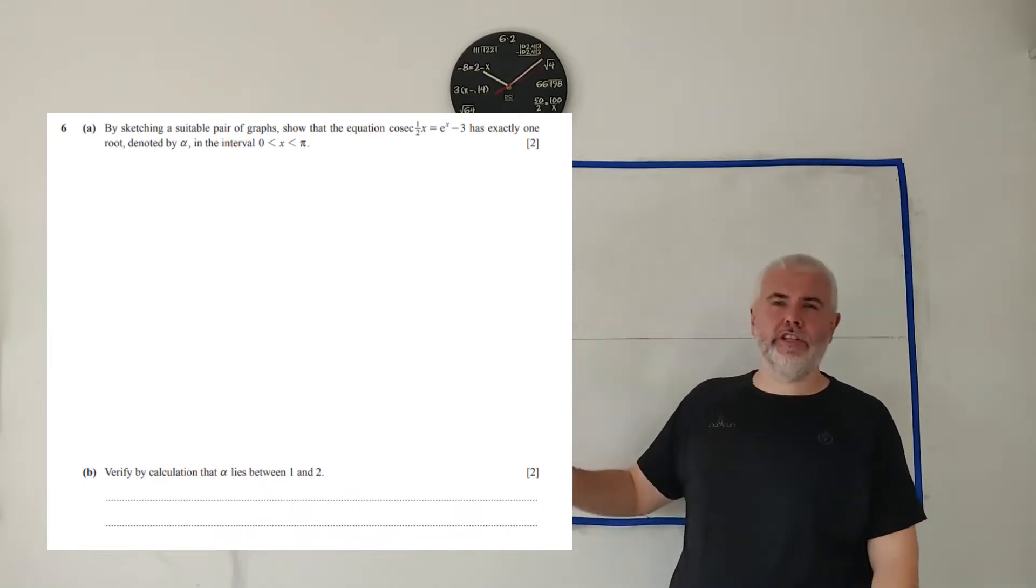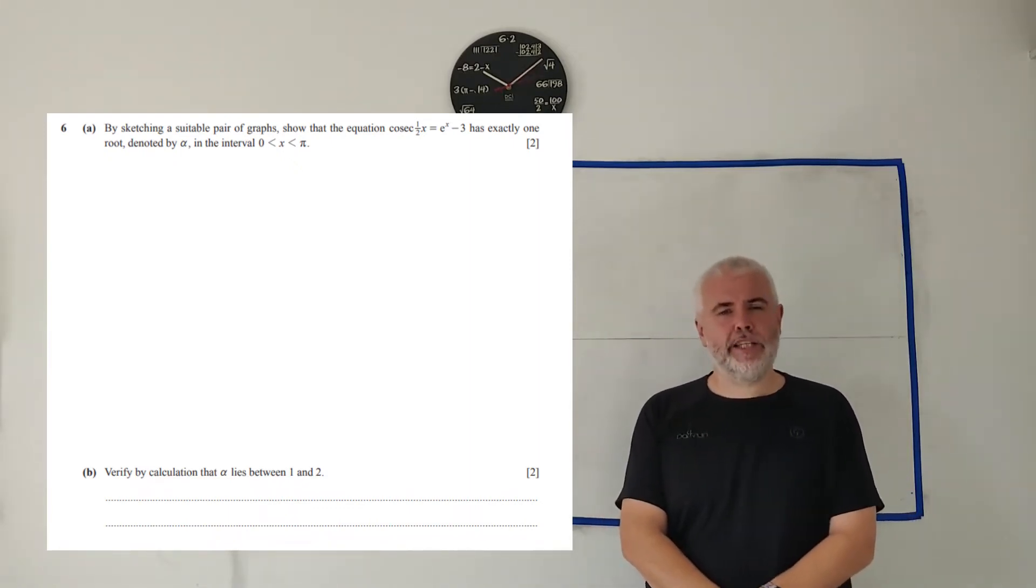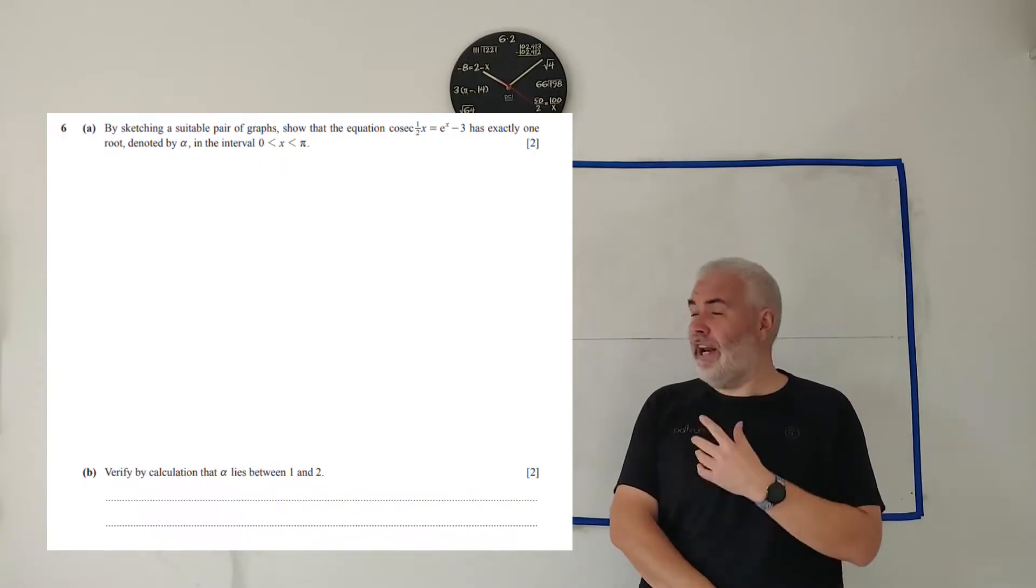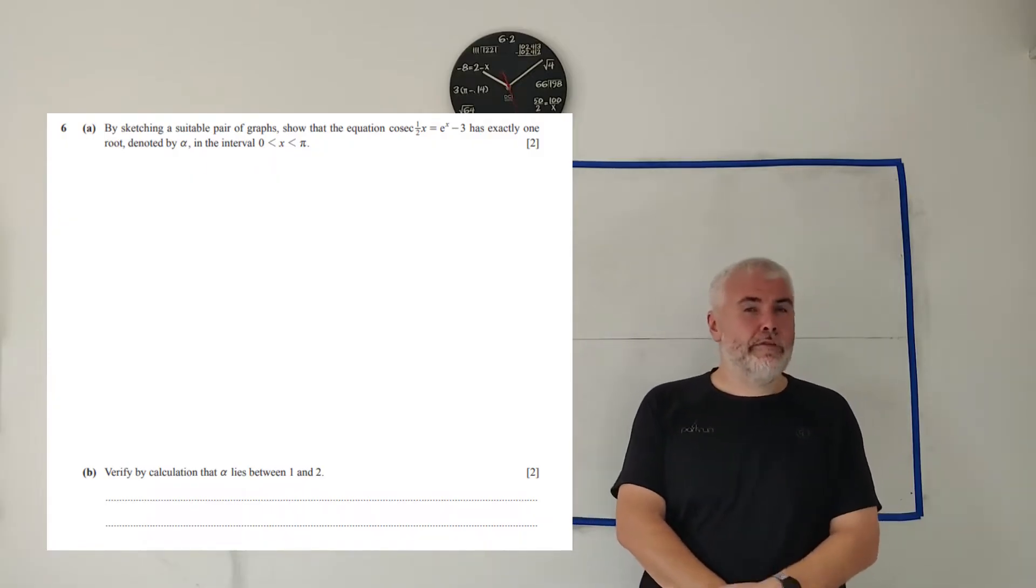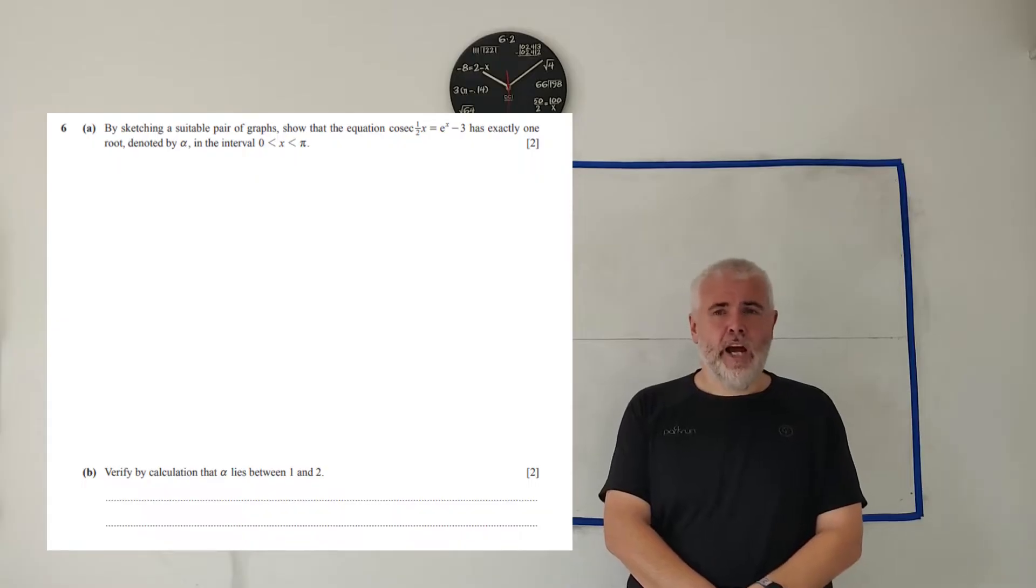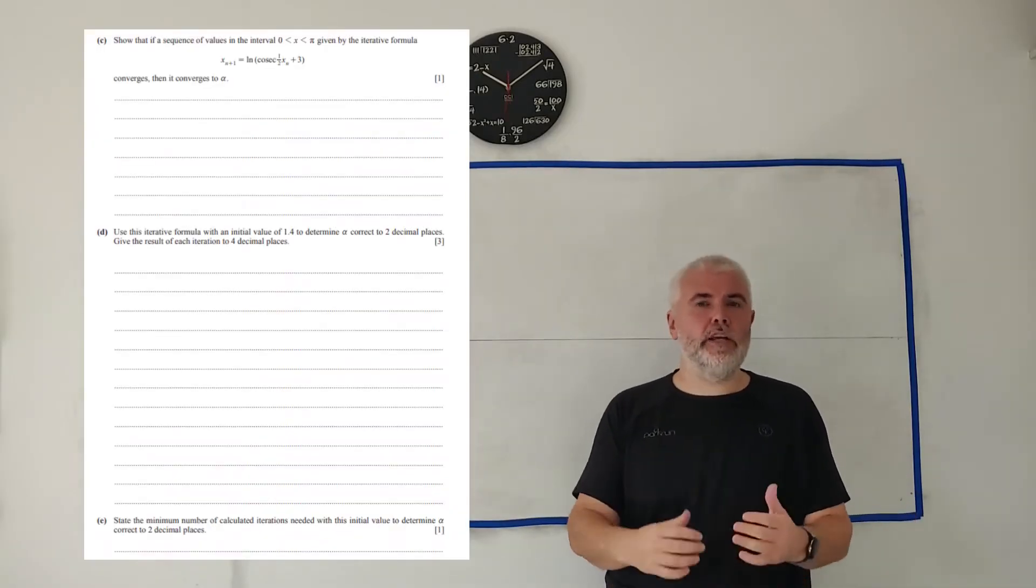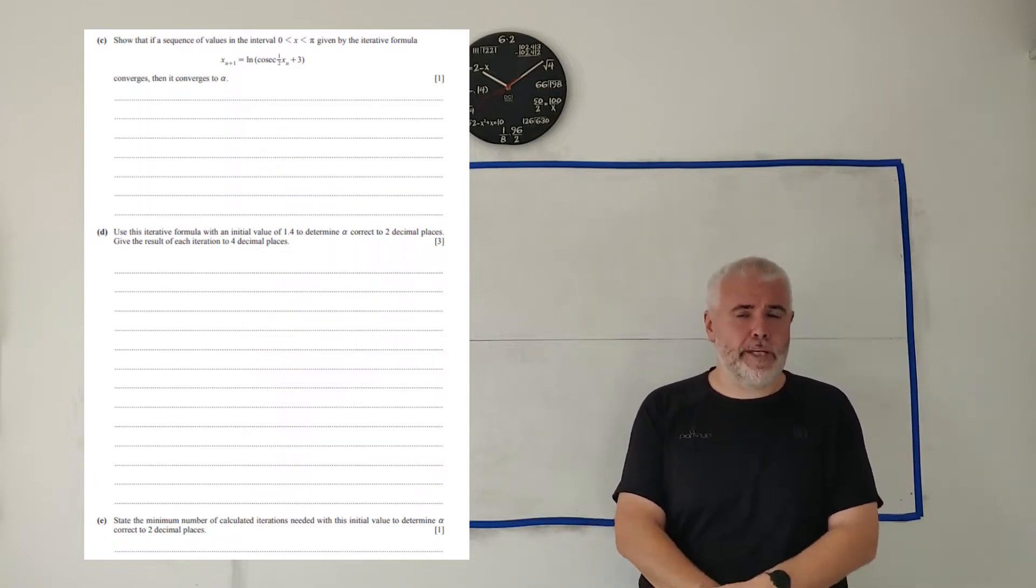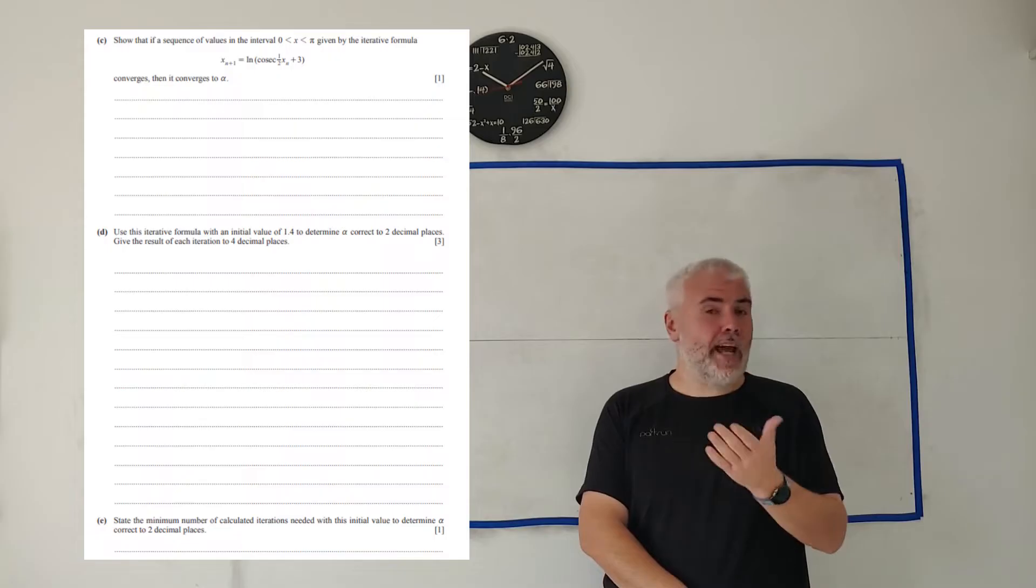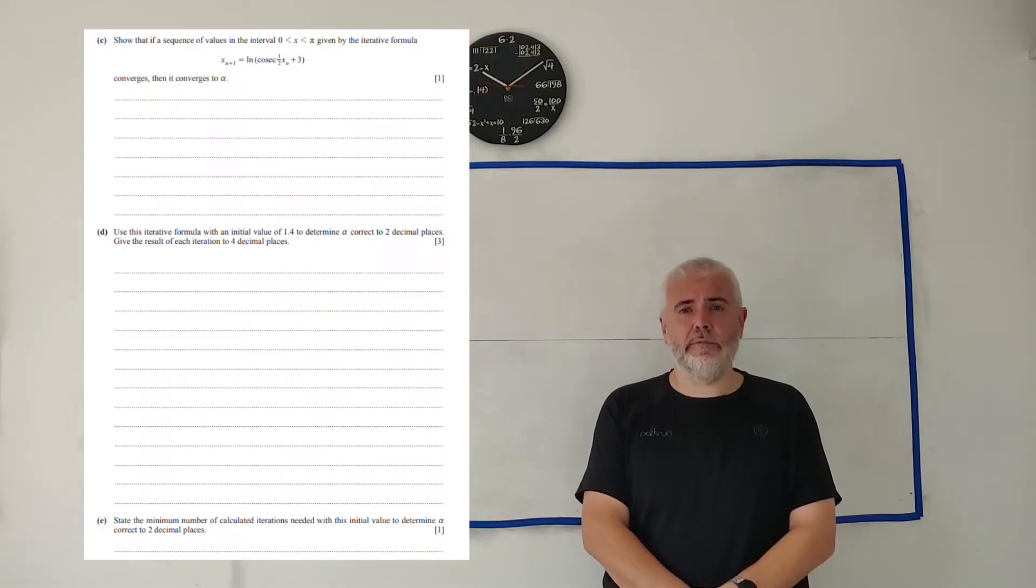In this video, I'll be working through the question you see on the screen from the Pure Maths paper 3, specifically paper 3.1 from Cambridge A-level exams from 2024. If you're looking for any other question from this paper, you should find a playlist in the description below. I'll be doing all this on a whiteboard, hopefully just like you're used to your teacher doing. If you find any of my videos useful, I would appreciate a like, subscribe, or sharing it with someone else doing the A-level exams.